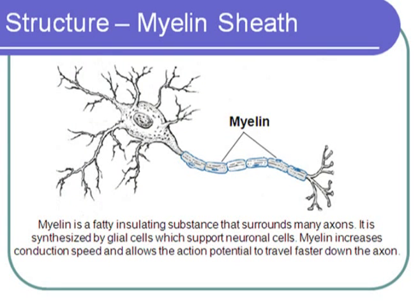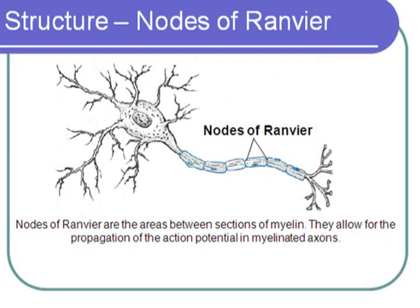In the nervous system, the axons of neurons can be myelinated or non-myelinated. Myelin is a fatty insulating substance that is synthesized by glial cells, which support neuronal cells. Myelin increases conduction speed and allows action potentials to travel faster down the axon. The myelin sheath that surrounds many axons is not continuous — there are areas between sections of myelin called nodes of Ranvier, which are not electrically insulated and allow the propagation of the action potential in myelinated axons.